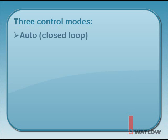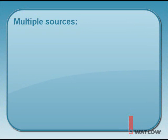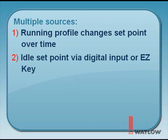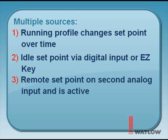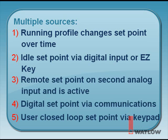In this video installment, our focus is on the auto mode. To see how to change control modes, refer to the user's manual or watch other video installments. The closed-loop setpoint used in auto mode has multiple sources for requesting the process to change value. Some of the possible sources are: a running profile programmed to change the setpoint over time; an idle setpoint requested via digital input or an easy key; a remote setpoint fed to the controller using a second analog input; a setpoint generated and sent using communications from a PC or PLC; and most commonly, the user requests a closed-loop setpoint using the keypad.